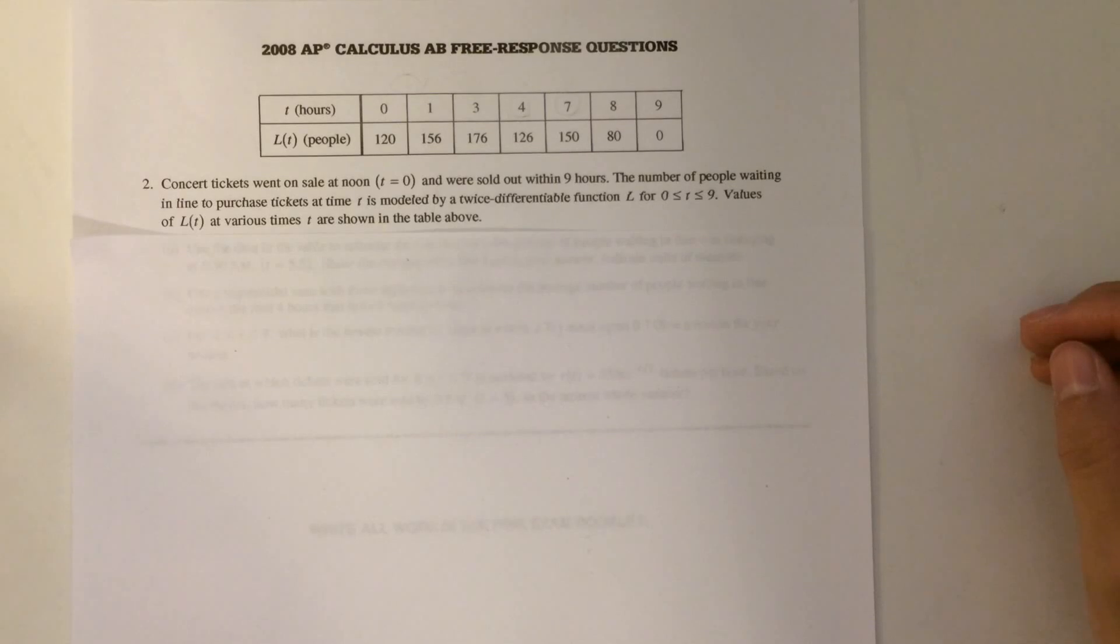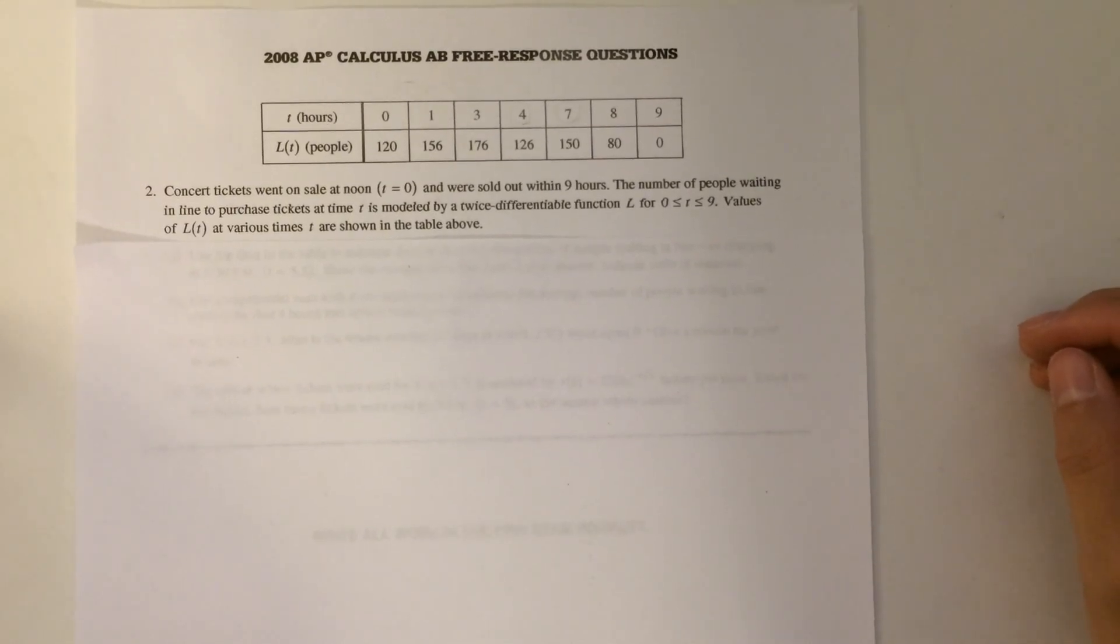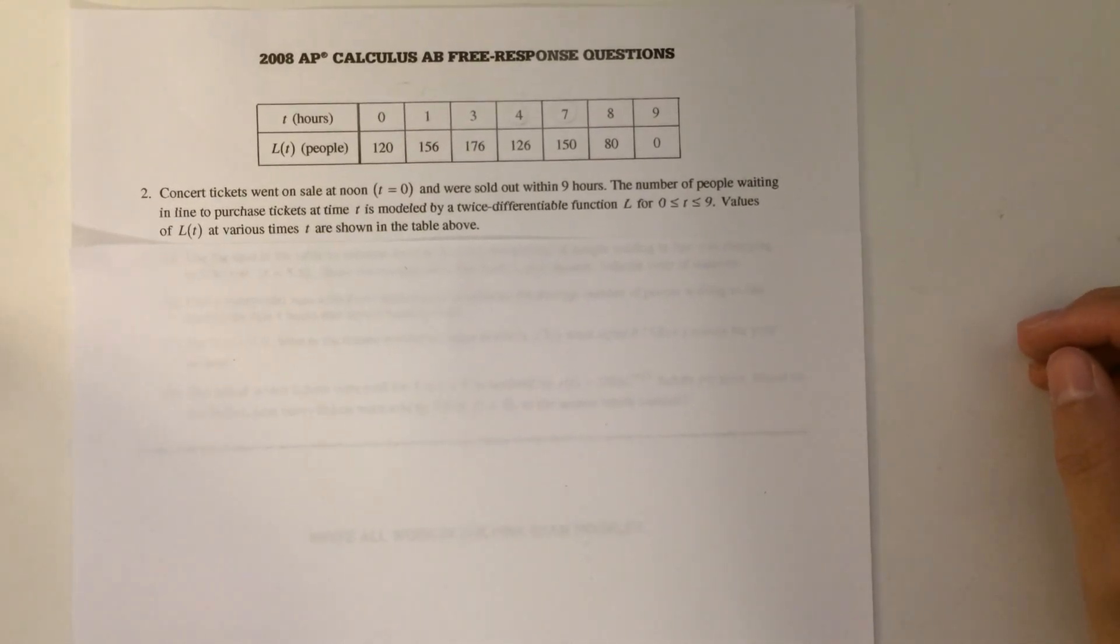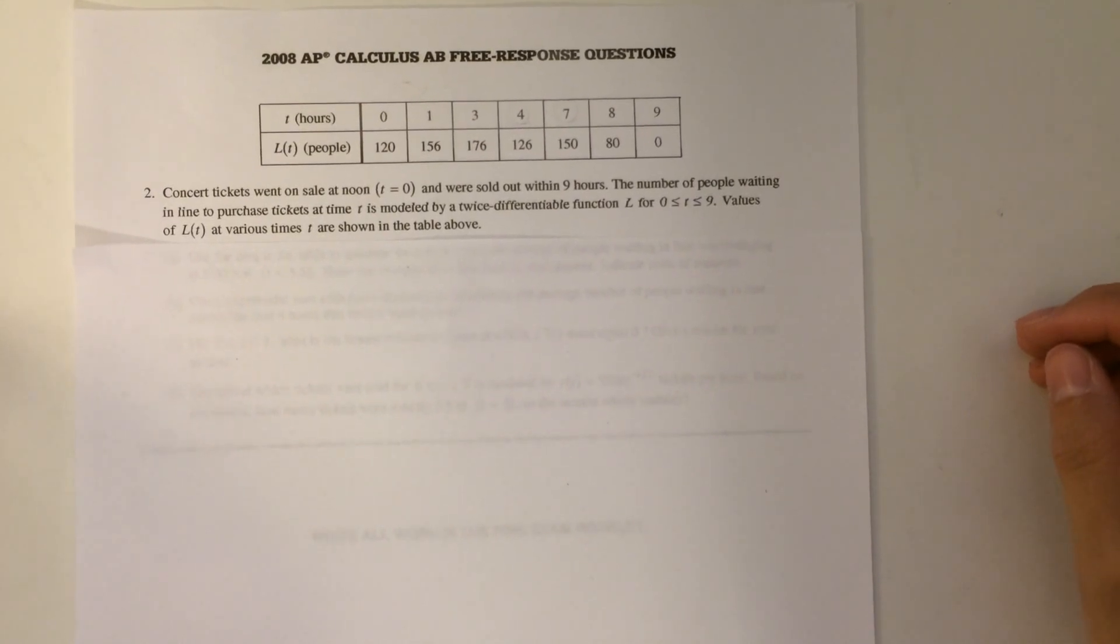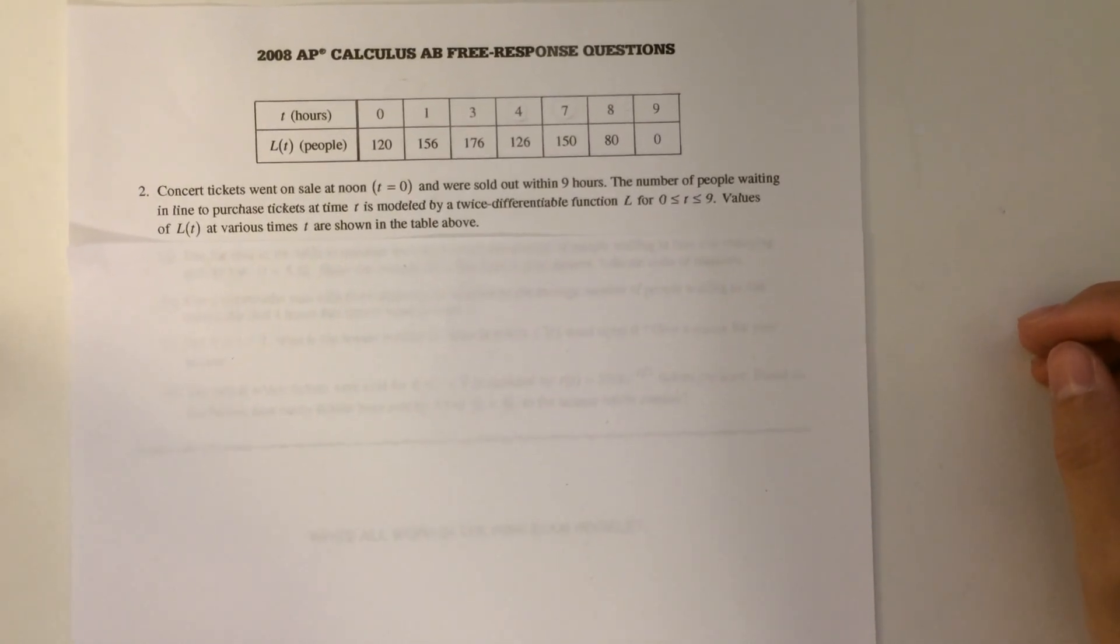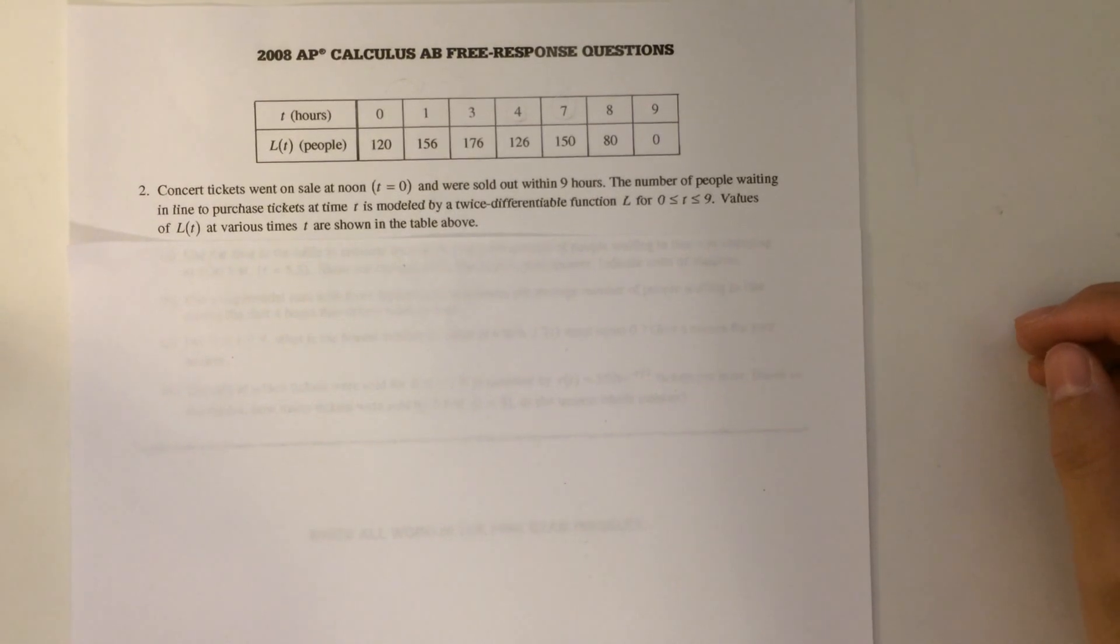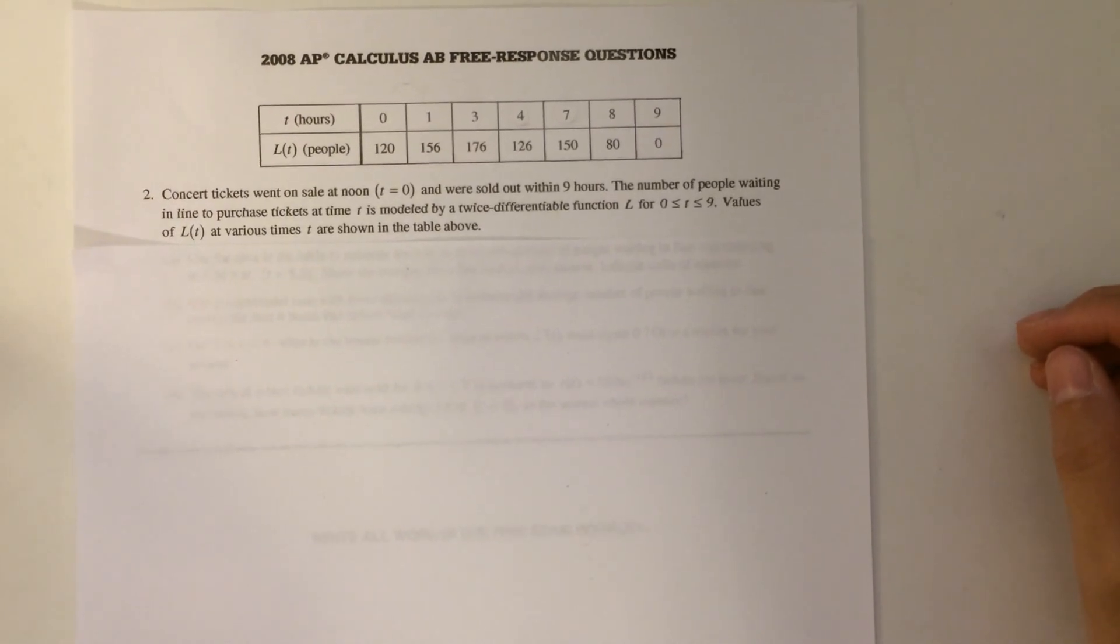The number of people waiting in line to purchase tickets at time t is modeled by a twice-differentiable function l for t between 0 to 9 hours. Values of l at various times t are shown in the table above.